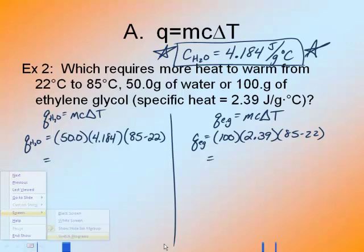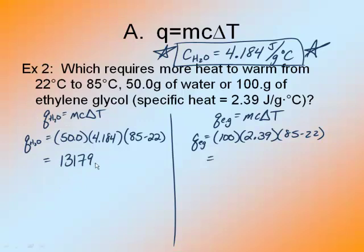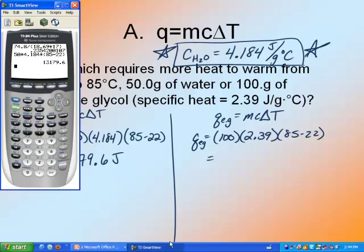Whip out the calculator. So I have 50 times 4.184 times 85 minus 22 is 13179.6 joules. And then for the ethylene glycol, I'm going to do the same thing, 100, but I'm going to plug in my new numbers, times 2.39 times 85 minus 22, close my parentheses, 15057.